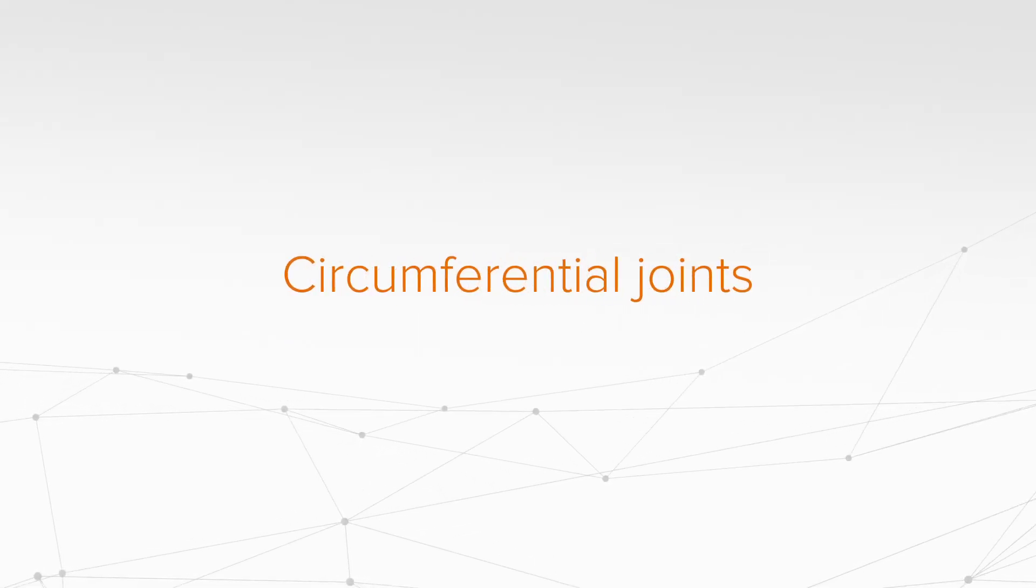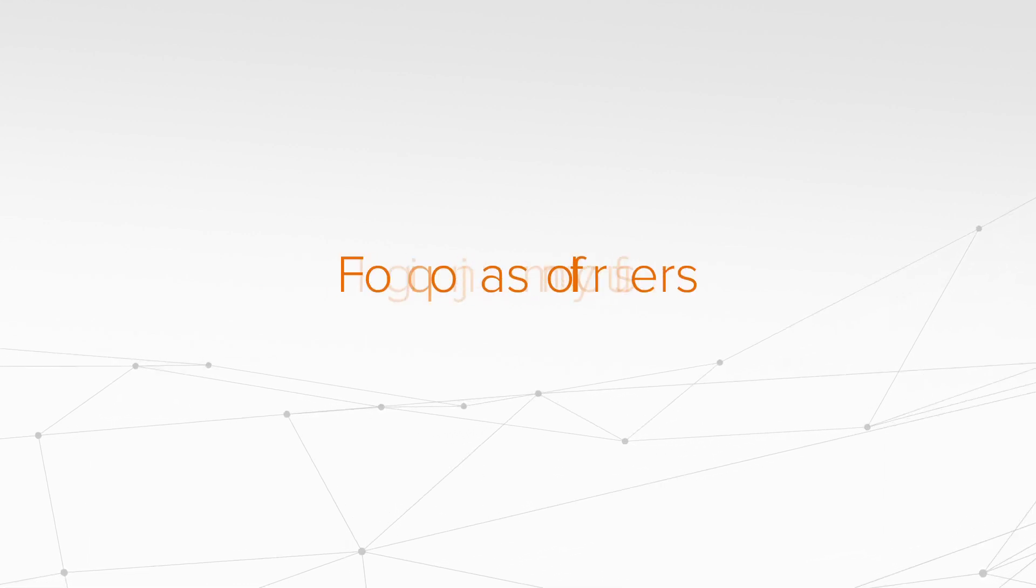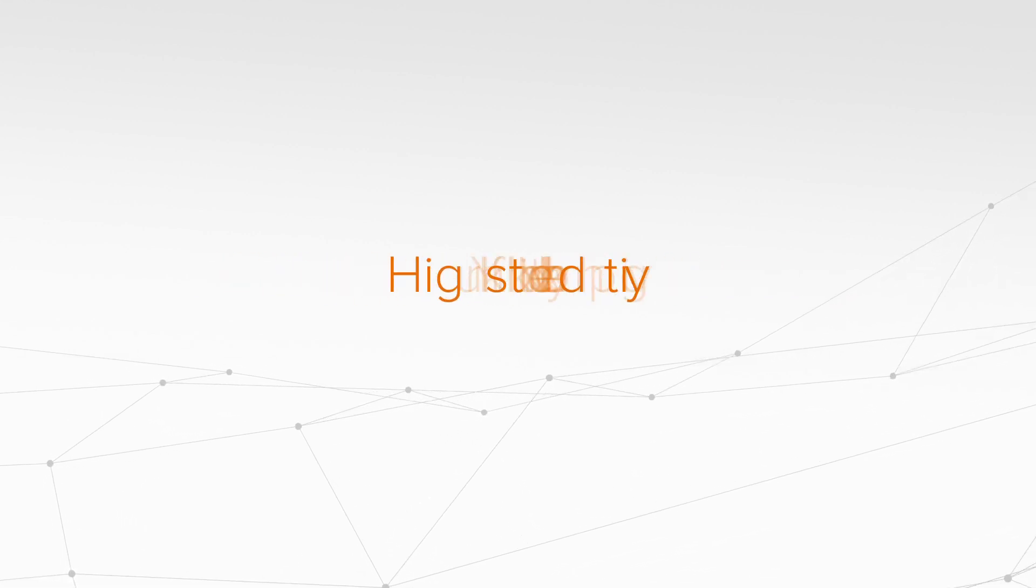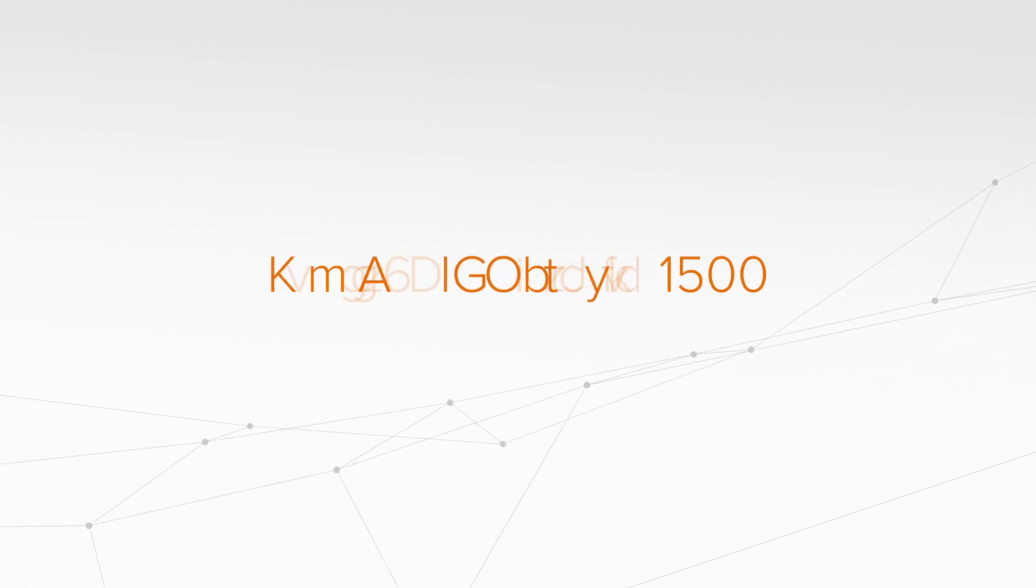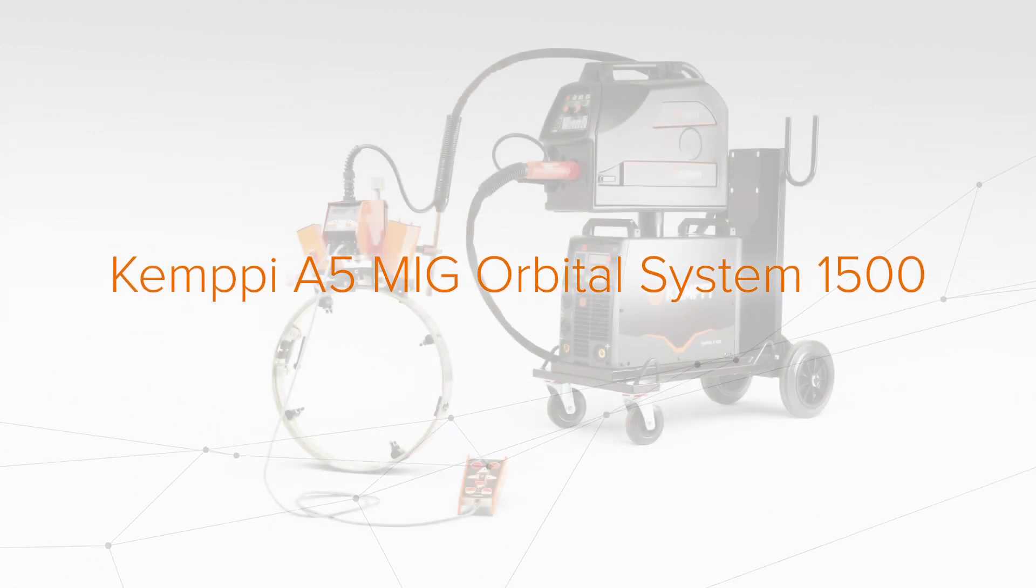What does it take to weld complete circumferential joints from root pass to filler layers with the best possible quality? It just takes one mechanization system: Kemppi A5 MIG Orbital System 1500.